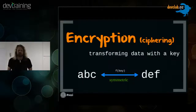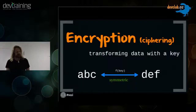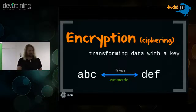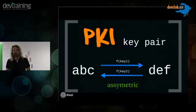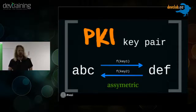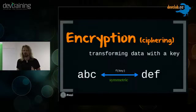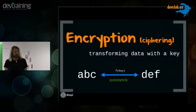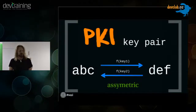Encryption — or as ordinary people call it, ciphering — is when you transform data with a key. You have some key, you have input data like ABC, you transform it and get DEF. For example, you shift every letter by the same amount — that's the key. With PKI, public key infrastructure, a key pair was introduced, meaning you have two keys. In symmetric encryption you use only one key both ways. In a key pair infrastructure, you use one key to transform one way and another key to transform back. This is called asymmetric cryptography.